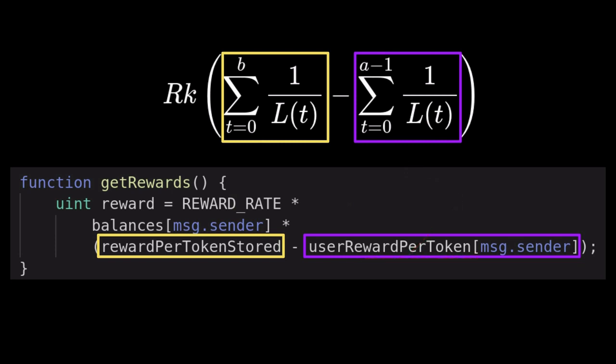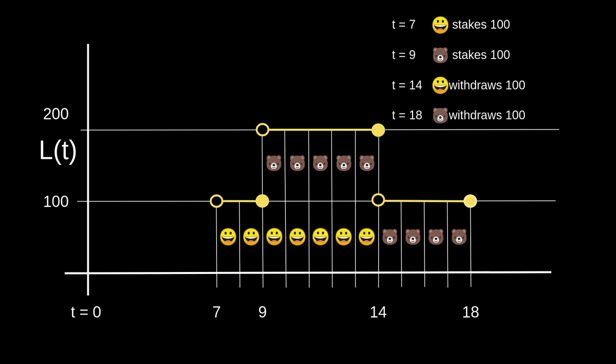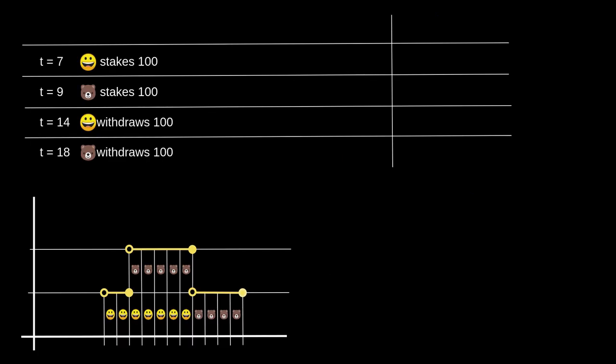Let me walk you through an example and show you how it works. At t equals 7, Alice stakes 100 tokens. At t equals 9, Bob stakes 100 tokens. At t equals 14, Alice withdraws 100 tokens. And at t equals 18, Bob withdraws 100 tokens.